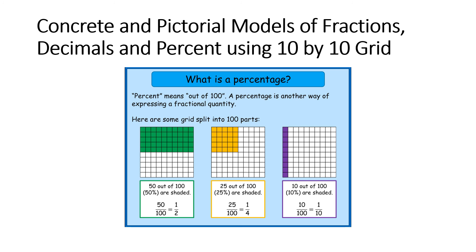The next one we notice, we have 25 out of 100. 25 percent are shaded. This is 25 over 100 which equals or can be simplified to one-fourth. And last, we have 10 out of 100. 10 percent are shaded. This represents 10 over 100 or simplified as 1 over 10.